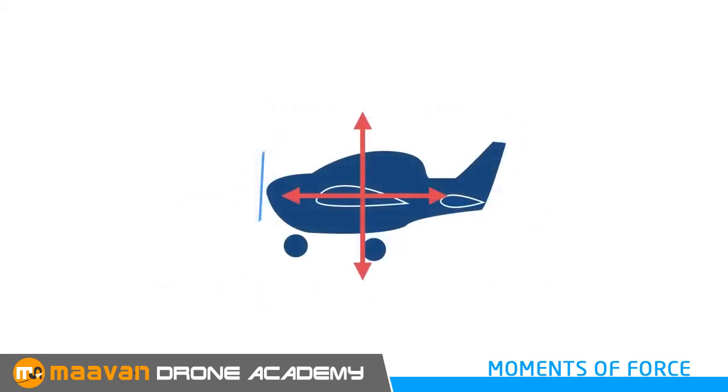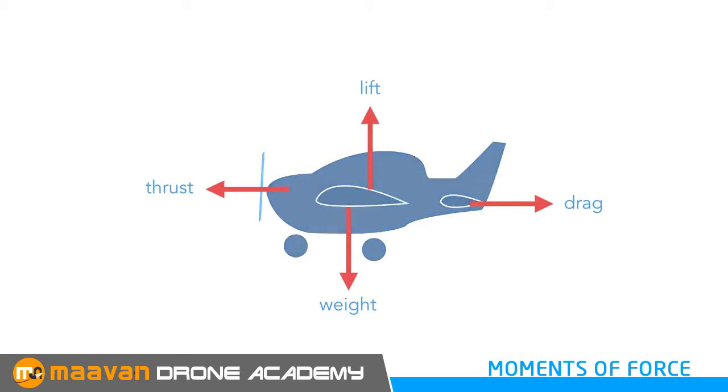These arrows represent the four main forces acting on an aeroplane in flight. For demonstration purposes, these forces are often shown to act from a single spot, but in reality that's not the case. On a typical light aircraft, the average of weight is slightly forward of lift. Thrust is above drag. Combining the moments of these forces together suggests that in this configuration the aeroplane has a natural tendency to pitch down.